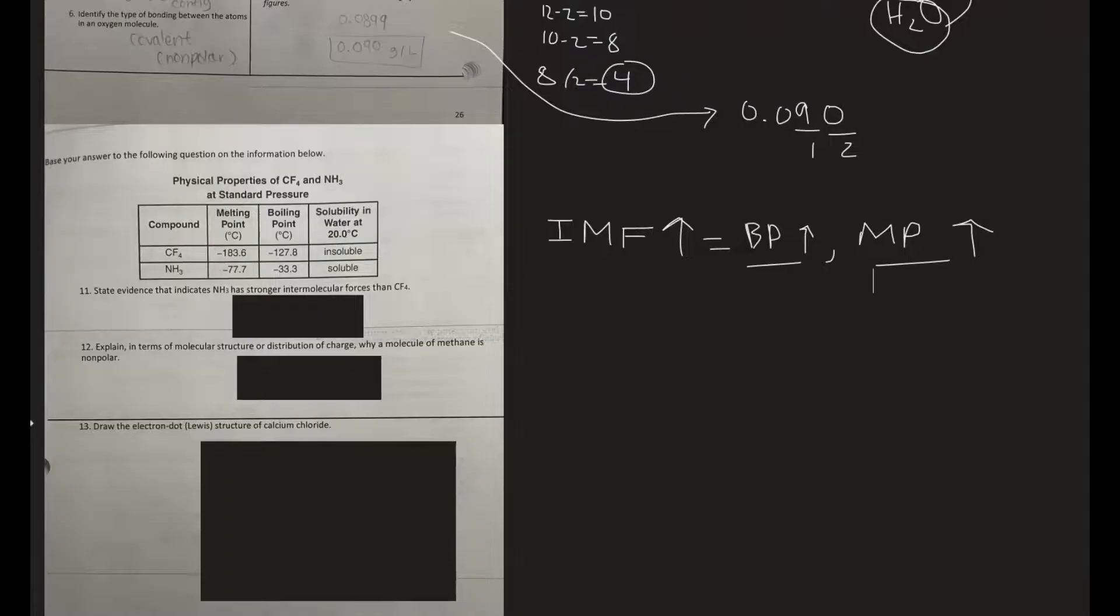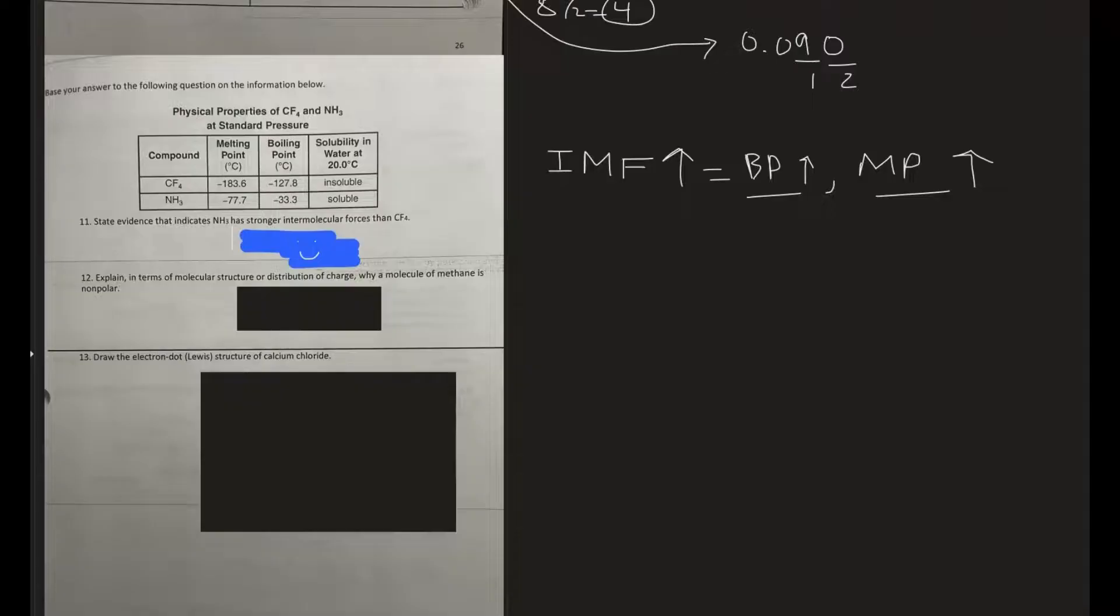Number 12: Explain in terms of molecular structure or distribution of charge why a molecule of methane, which is NH4, is non-polar. If you were to draw this out, you can just talk about the distribution of charge. Symmetrical distribution of charge—symmetrical molecule here—and therefore it is non-polar, equal distribution of charge.